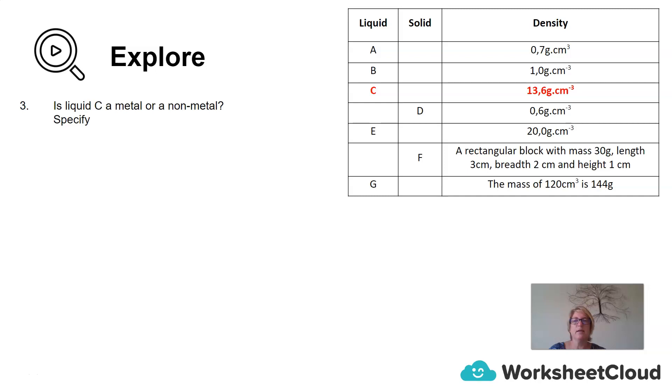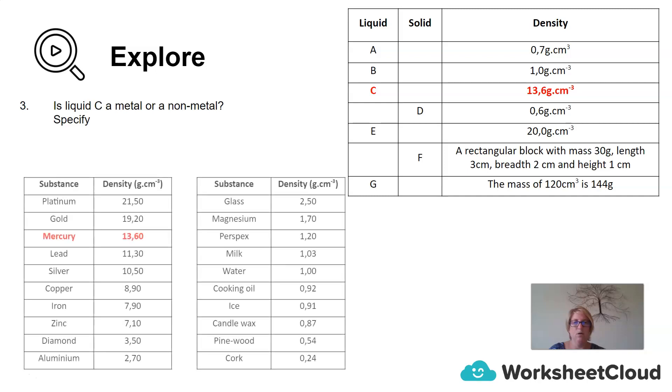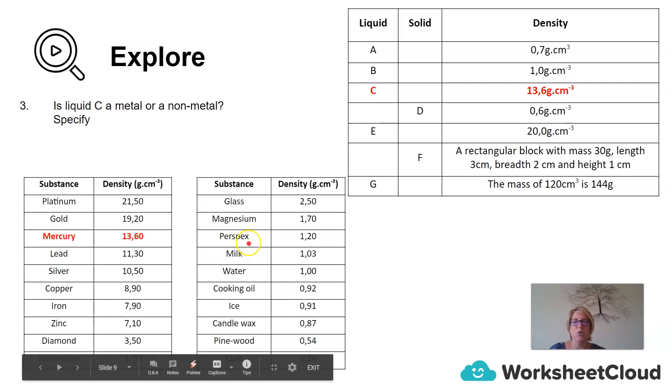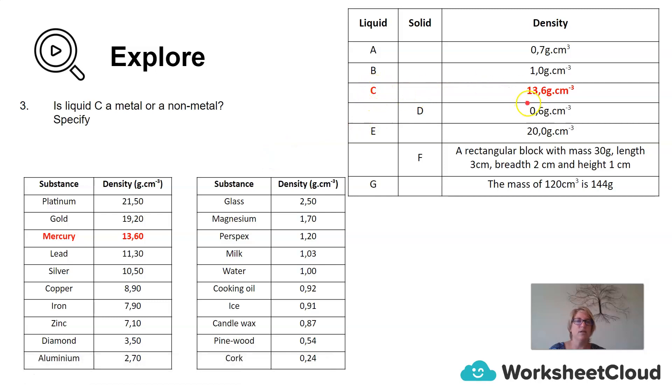Is liquid C a metal or a non-metal? If we go back to the density table, we will find that C has got a density of 13.6. The density table tells us that this is mercury. If we go to the periodic table, we will find that mercury is a liquid in its elemental form. So it's a liquid metal and it's mercury. We represent that with the symbol capital H, lowercase g.